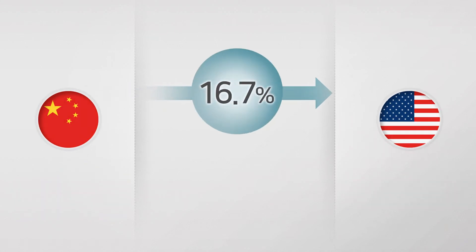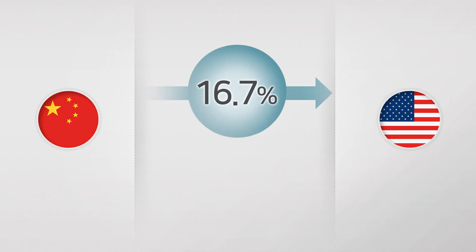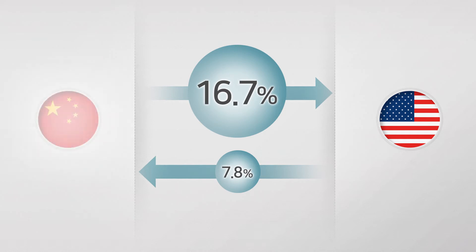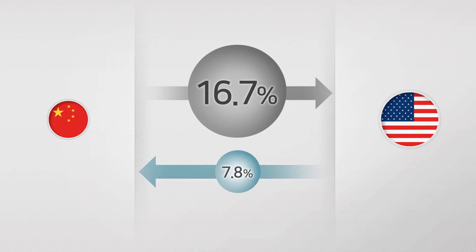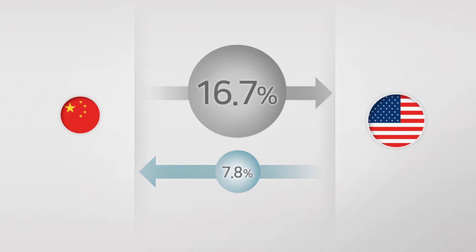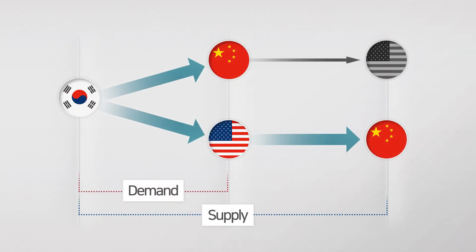However, 16.7 percent of China's total exports head for the U.S., while 7.8 percent of U.S. exports head for China. It can therefore be assumed that China's income and domestic demand are more vulnerable to trade disputes. This means that for Korea, who is more dependent on China, the negative blow from its exports to China will be more significant than from its exports to the U.S.